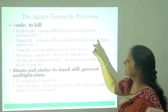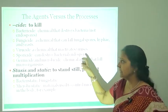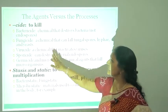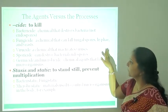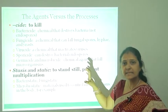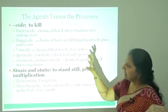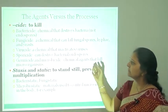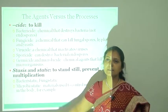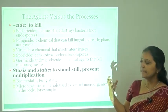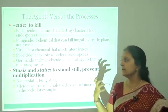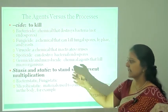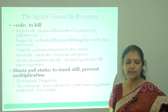Bactericides are chemicals that destroy bacteria. Fungicides are chemicals that can kill fungal spores, hyphae, and yeast. Viricides are chemicals that kill or inactivate viruses. Sporicides are chemicals that can destroy spores. Germicides are chemical agents that kill microorganisms.